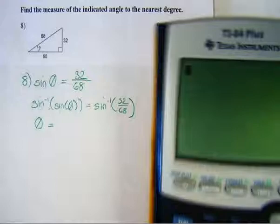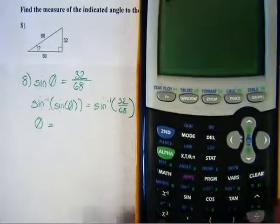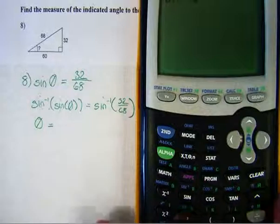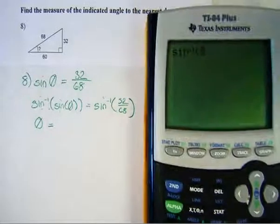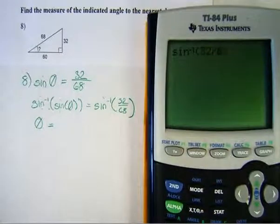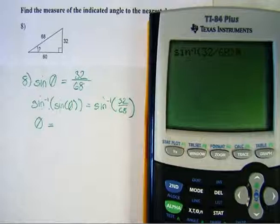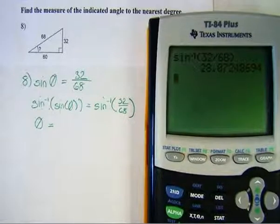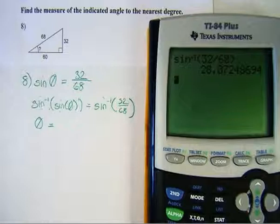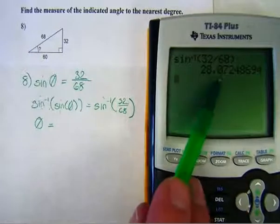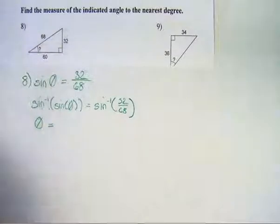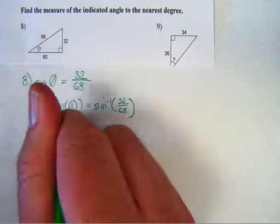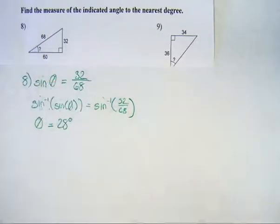And I find that that is 28.072. I'm to round to the nearest degree, so that's 28. The zero means I'm going to keep it there. So theta is equal to 28 degrees.